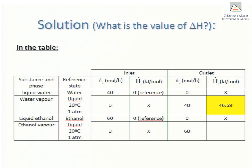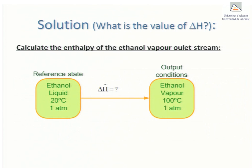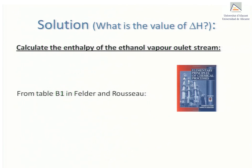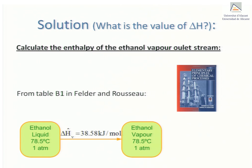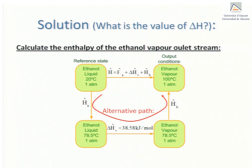Now, we repeat the calculation for ethanol vapor. As was the case with water, for ethanol we also find two differences between the reference state and outlet conditions. They are again phase and temperature. This forces us anew to take an alternative process path. To this end, we consult standard tables to obtain information about the evaporation of ethanol. For instance, table B1 in the back of Felder and Rousseau shows that at 78.5 degrees C and atmospheric pressure, the latent heat of vaporization of ethanol is 38.58 kJ per mole.